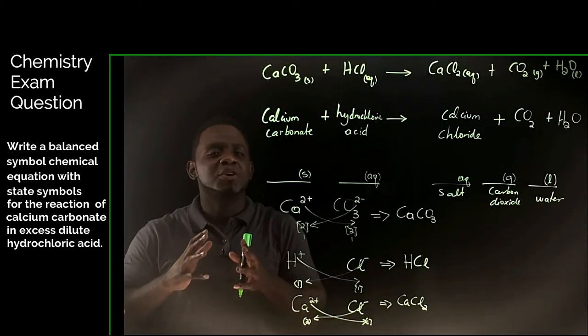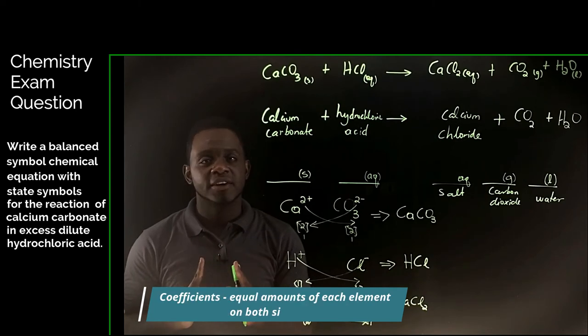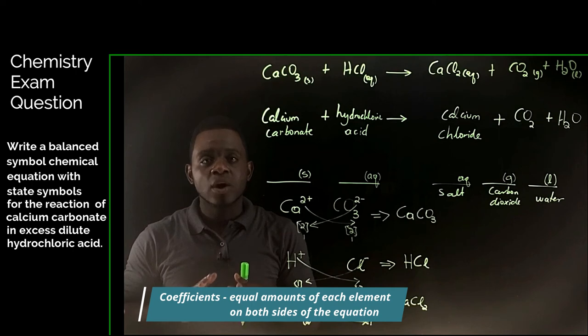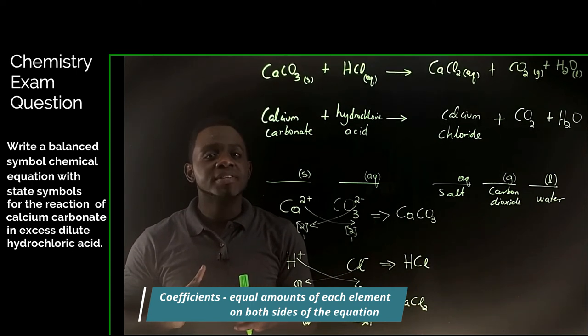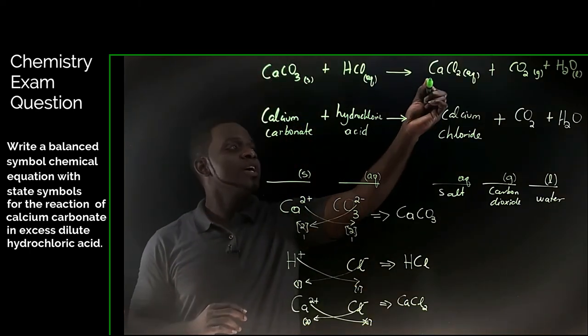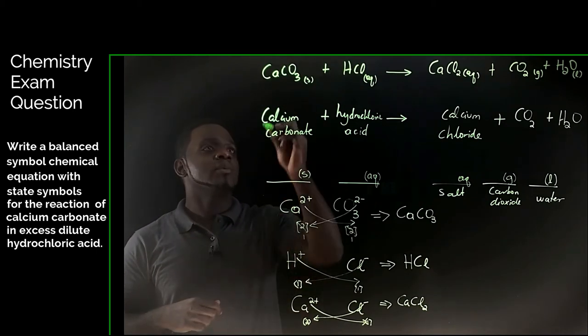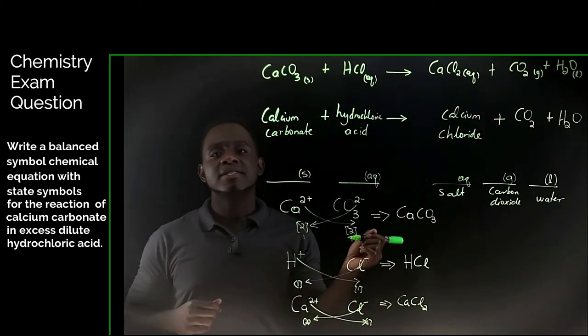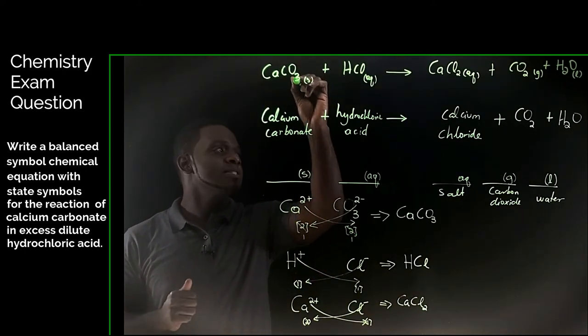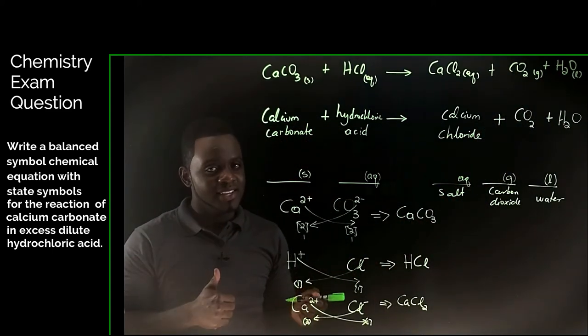And now we are at our final stage where we will use coefficients, if necessary, to ensure that there are equal amounts of each element on both sides of the equation. On the left hand side, we have 1 calcium. We also have 1 on the right hand side. That's fine. On the left hand side, we have 1 carbon. We also have 1 carbon on the right hand side. That's fine. We have a total of 3 oxygen on the left hand side and 2 and 1, 3 on the right hand side. Yay!